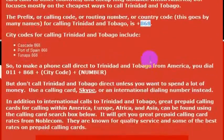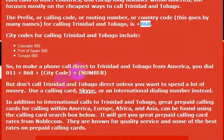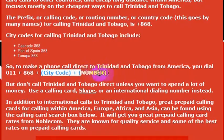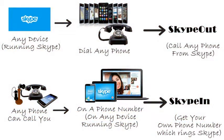If you wanted to reach the country from the United States dialing from a landline, you would simply dial 011, which gets you an outside dialing line, and then you would dial 868, which is the country code, and then the phone number that you want to reach.